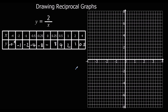Then we're going to plot that on the graph. So 4 goes with a half — that point is plotted there. 2 goes with 1, and 1 goes with 2.